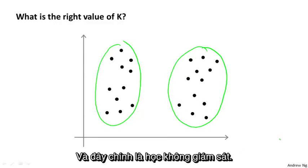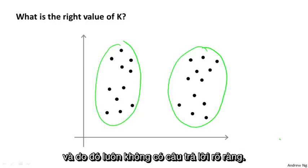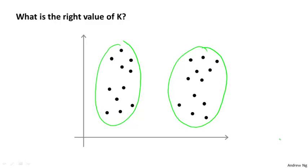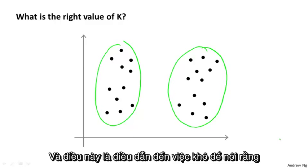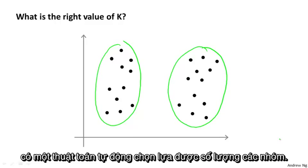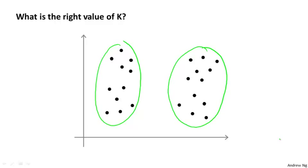And this is part of unsupervised learning. We aren't given labels, and so there isn't always a clear cut answer. And this is one of the things that makes it more difficult to say, have an automatic algorithm for choosing how many clusters to have.